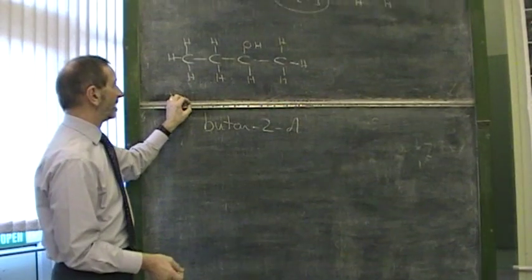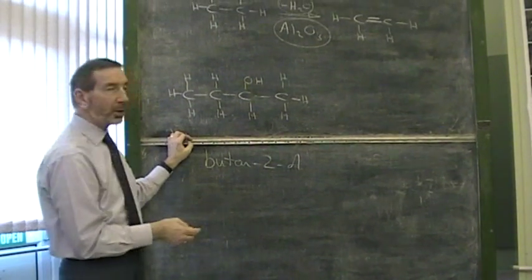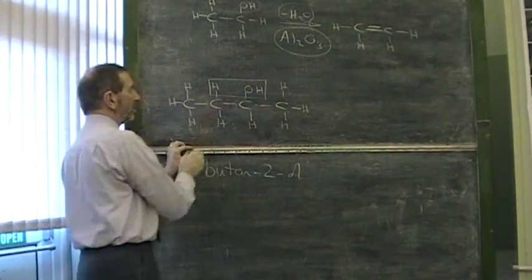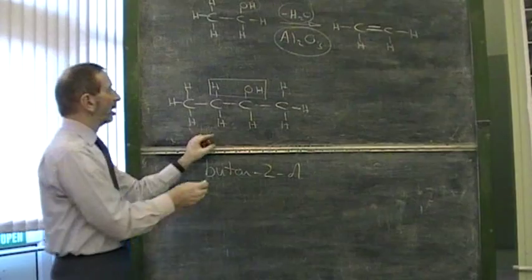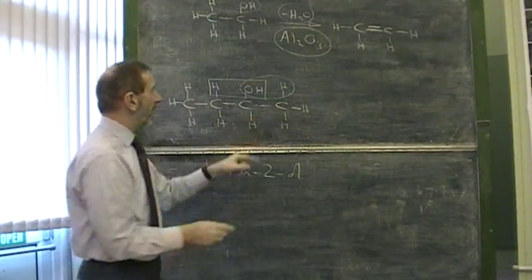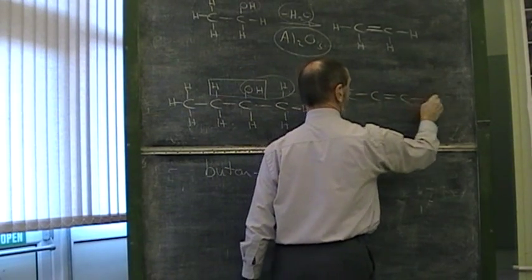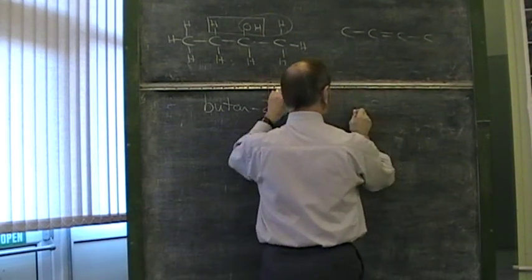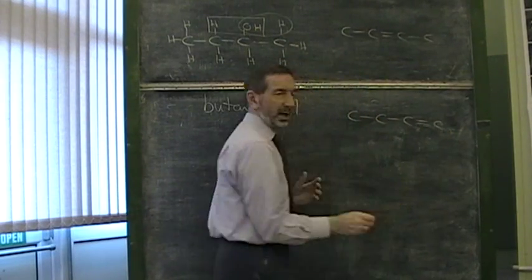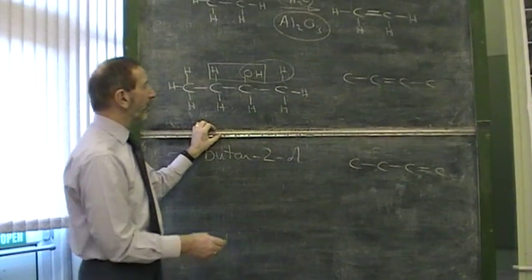Now, if this was to be dehydrated, what would we get? Well, there's two possibilities. If we're going to remove water, the water could be removed from that position, putting a double bond there, or from this position, putting a double bond there. That means there's two outcomes. You'd end up with a double bond in the middle of the molecule, or a double bond at the end of the molecule. Watch out for this. It's an example of the way you have to have your wits about you. You realize there's often more than one outcome.